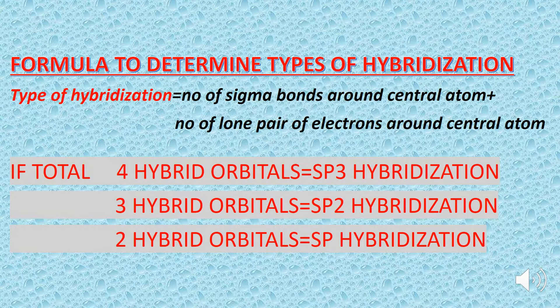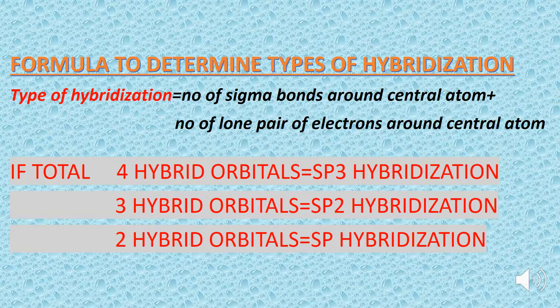Formula to determine the type of hybridization: the type of hybridization is equal to the number of sigma bonds (single bonds) around the central atom plus the number of lone pairs of electrons around the central atom. Note that if the total number of hybrid orbitals is 4, then the hybridization is SP³.